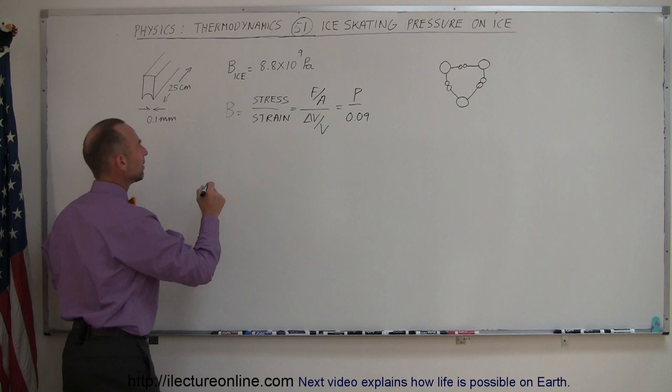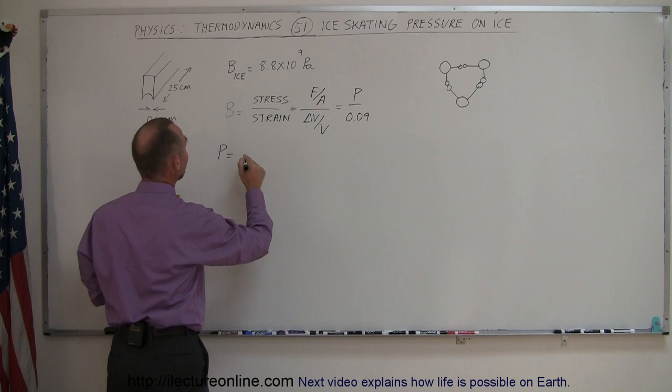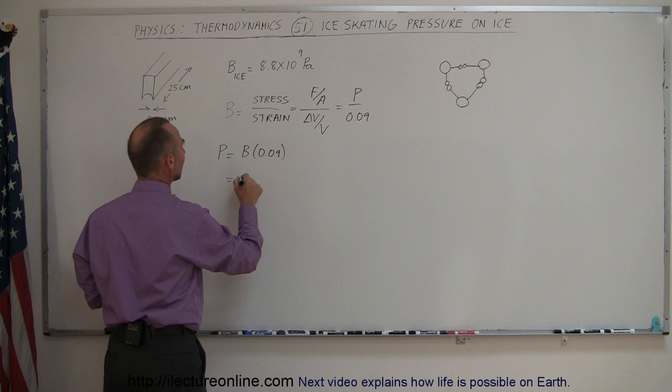Knowing that, the pressure required to melt the ice, to put it back from solid state into liquid state, is equal to the bulk modulus times 0.09.